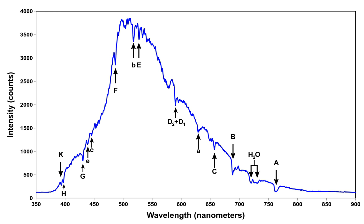Thermal Doppler broadening: The atoms in a gas which are emitting radiation will have a distribution of velocities. Each photon emitted will be red or blue shifted by the Doppler effect depending on the velocity of the atom relative to the observer. The higher the temperature of the gas, the wider the distribution of velocities in the gas. Since the spectral line is a combination of all of the emitted radiation, the higher the temperature of the gas, the broader the spectral line emitted from that gas. This broadening effect is described by a Gaussian profile and there is no associated shift.